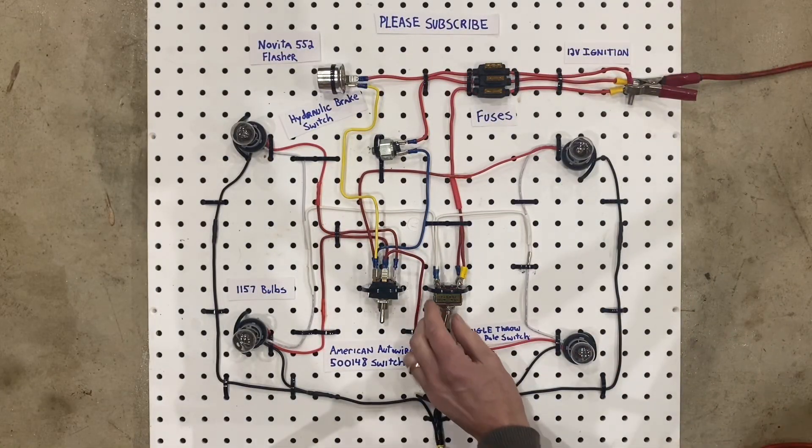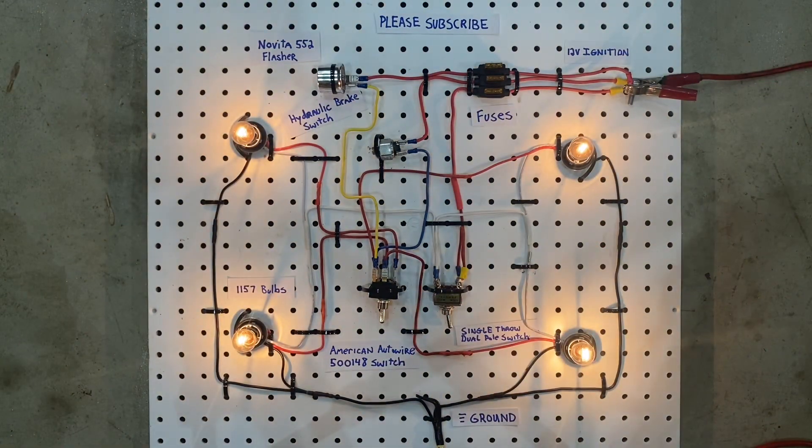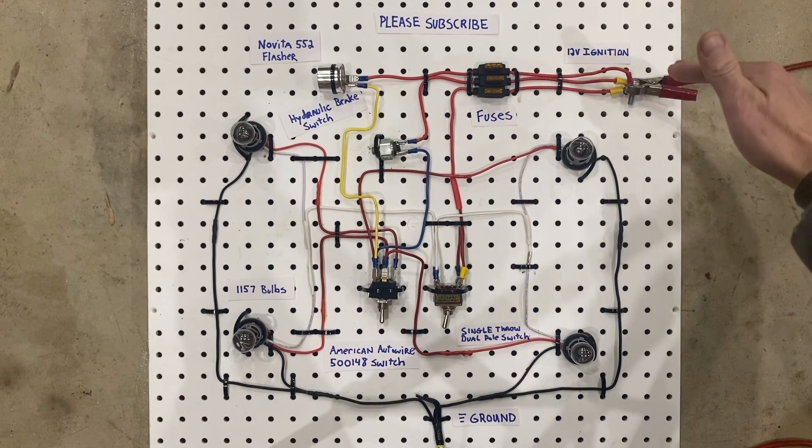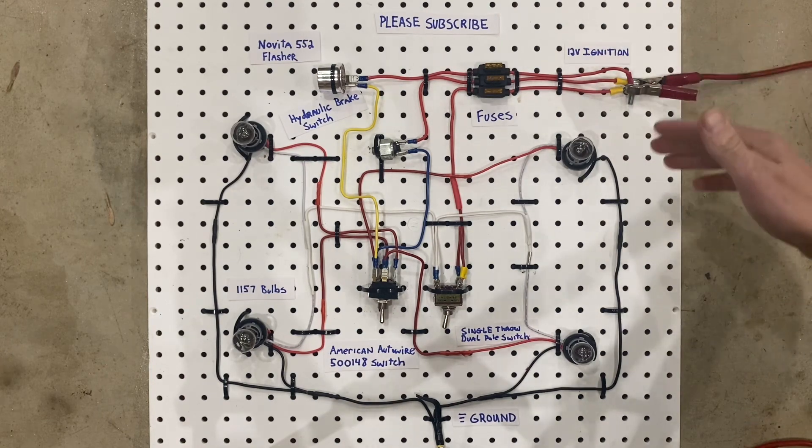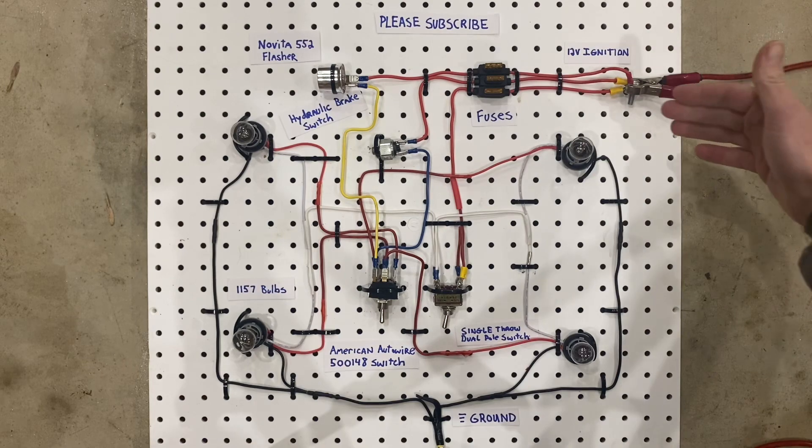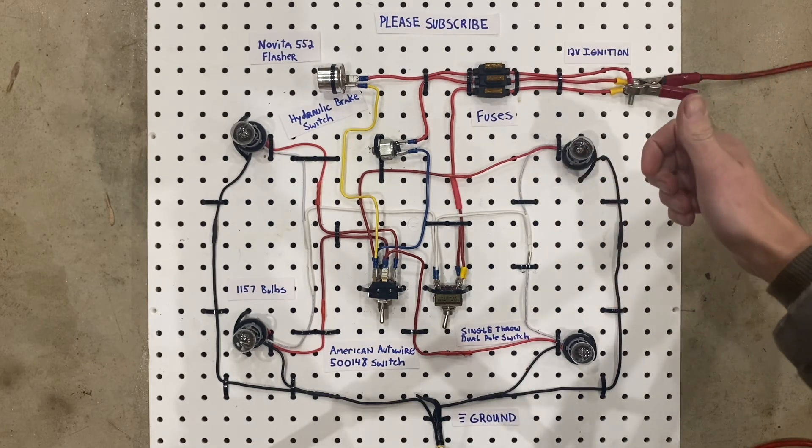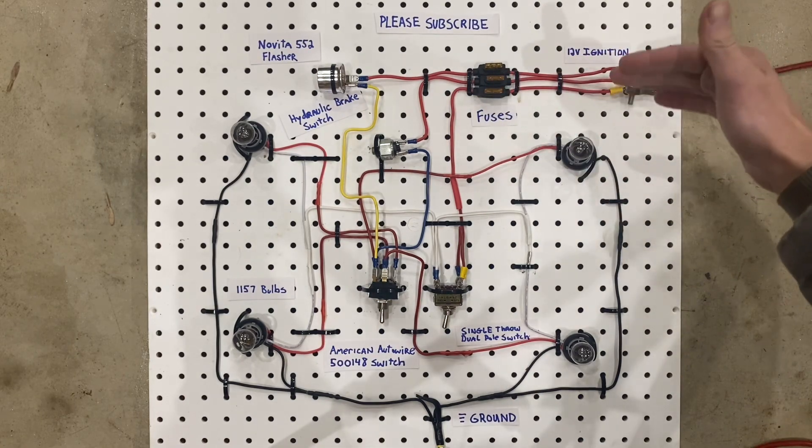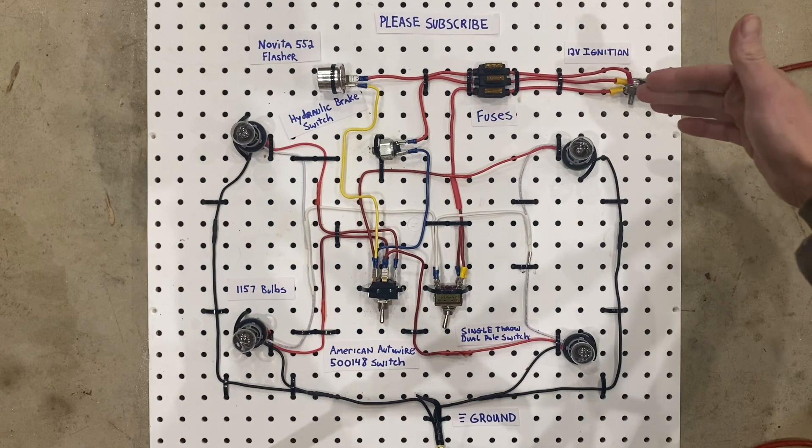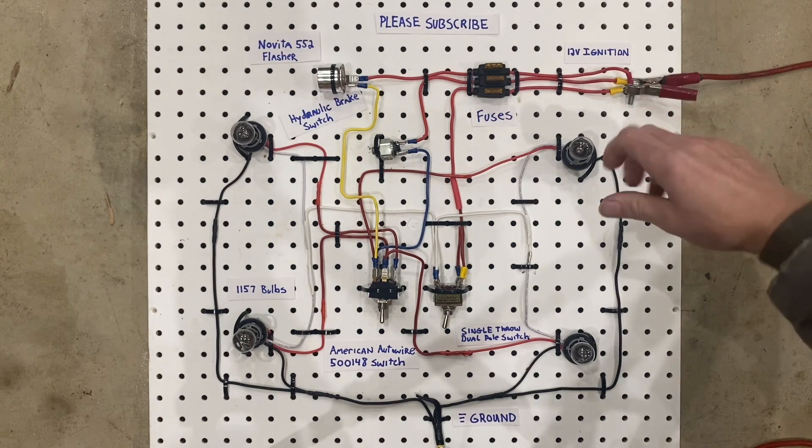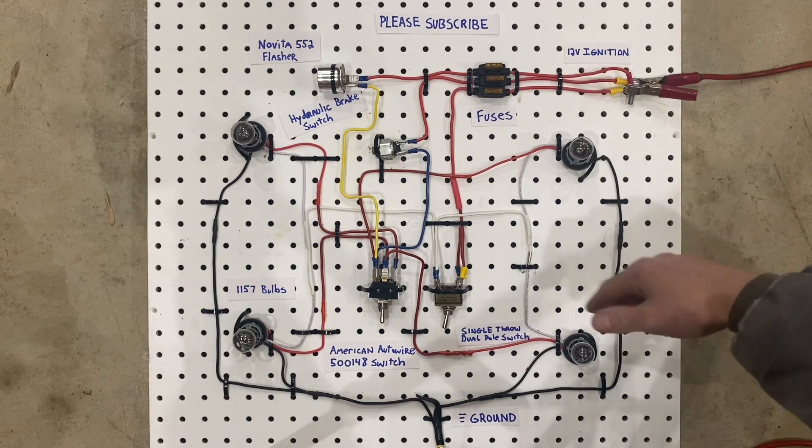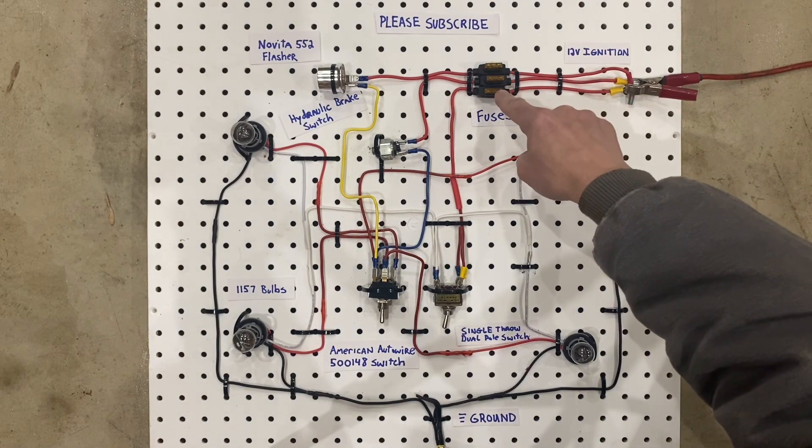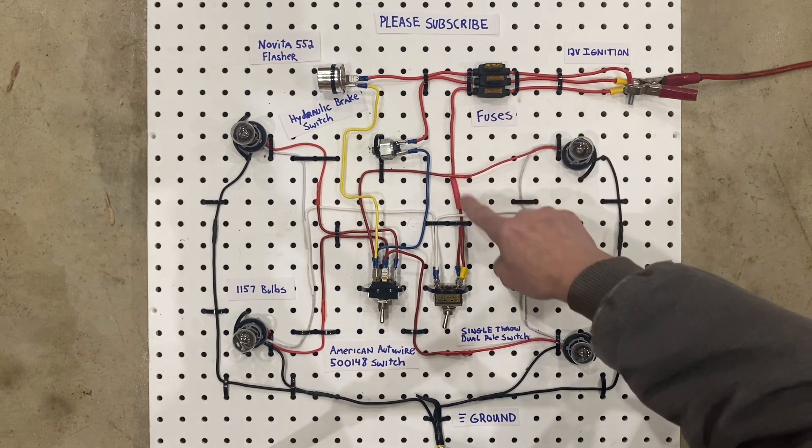The first circuit we're going to look at is the parking light circuit. It begins at the ignition. Now I say ignition, but I really mean battery power that is turned on by the ignition switch. So when you have your key in the run position, this circuit, and really all of these circuits should be powered with 12 volts. When you turn the key off, the 12 volts should go away. The parking light circuit starts here, goes through a fuse, and then it comes down here, it's this red wire.